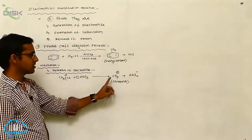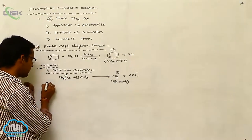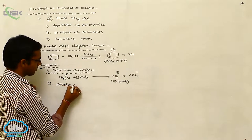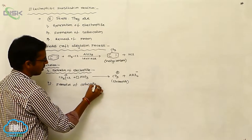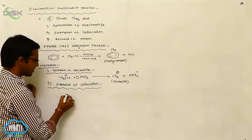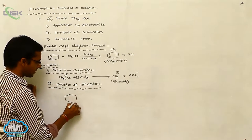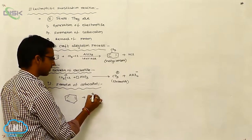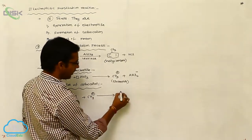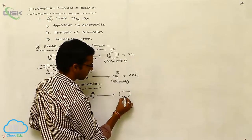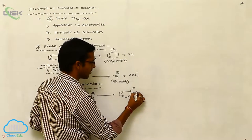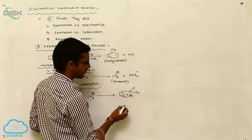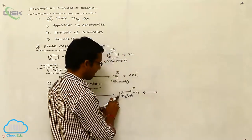In the Friedel-Crafts alkylation process, CH₃⁺ acts as the electrophile. The second step is the formation of a carbocation on benzene. Benzene interacts with the electrophile CH₃⁺, and upon attack of the electrophile — the methyl group — an intermediate product is formed. A positive charge develops on the ring, and the pi bond shifts, giving various resonating structures.